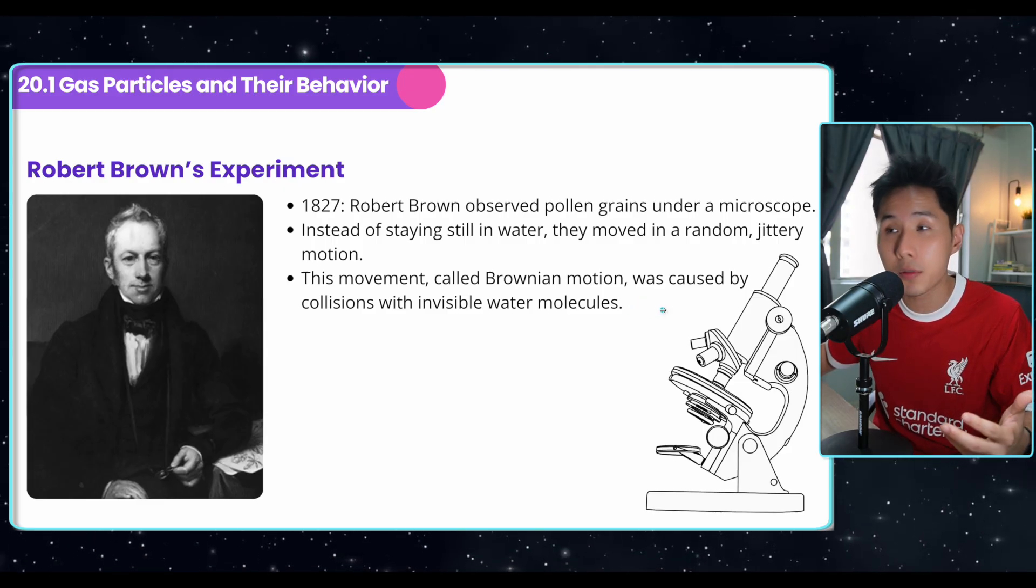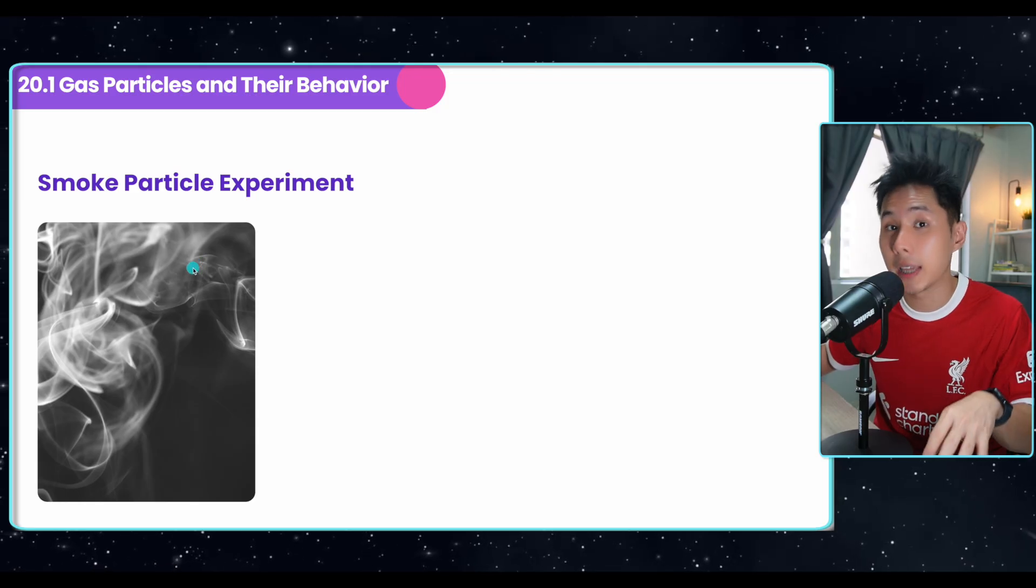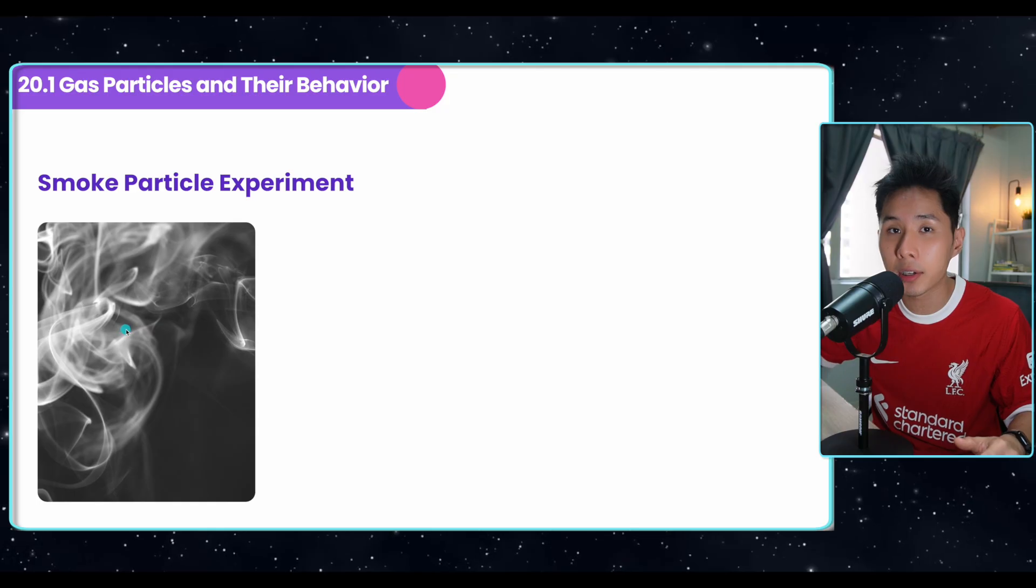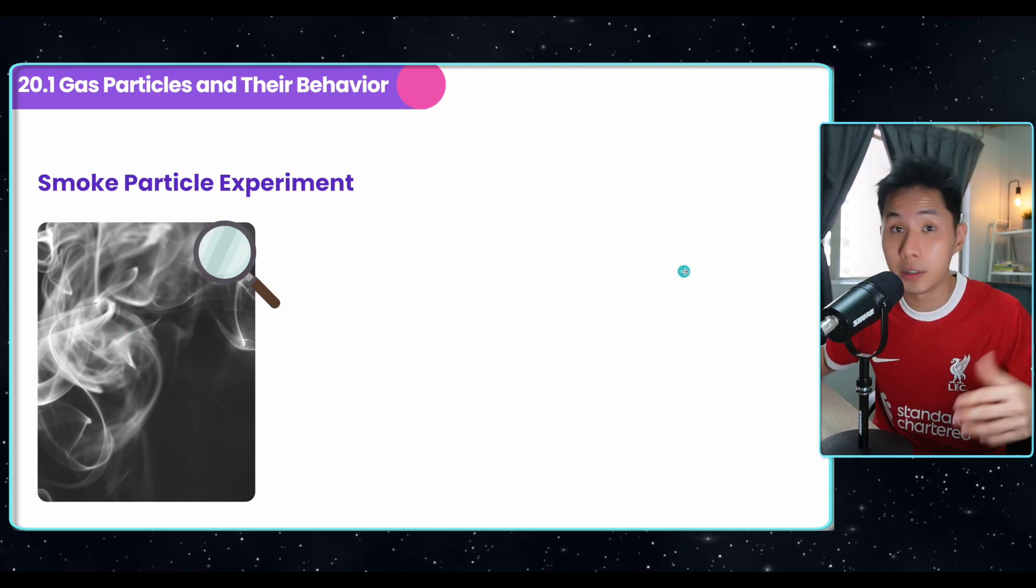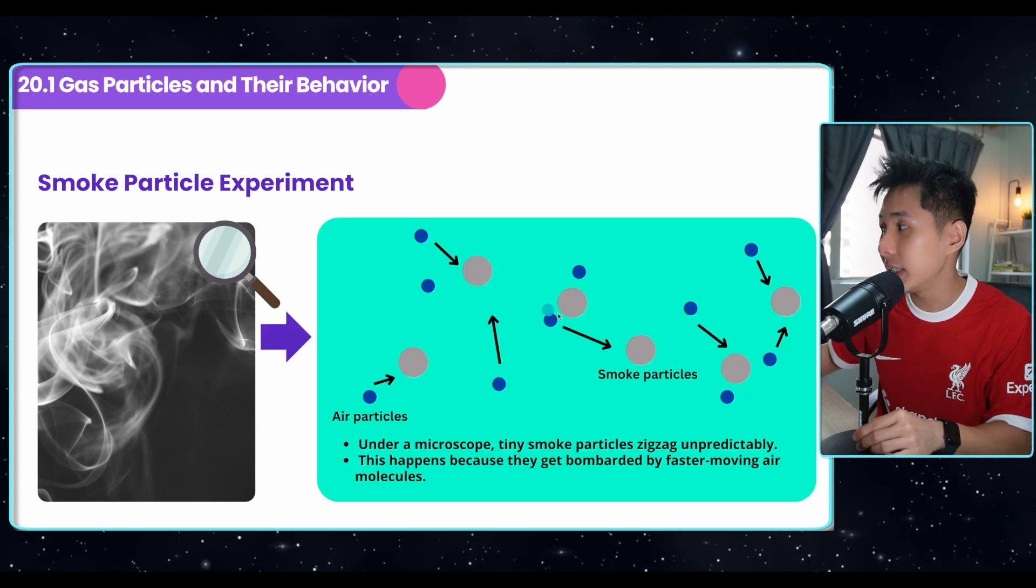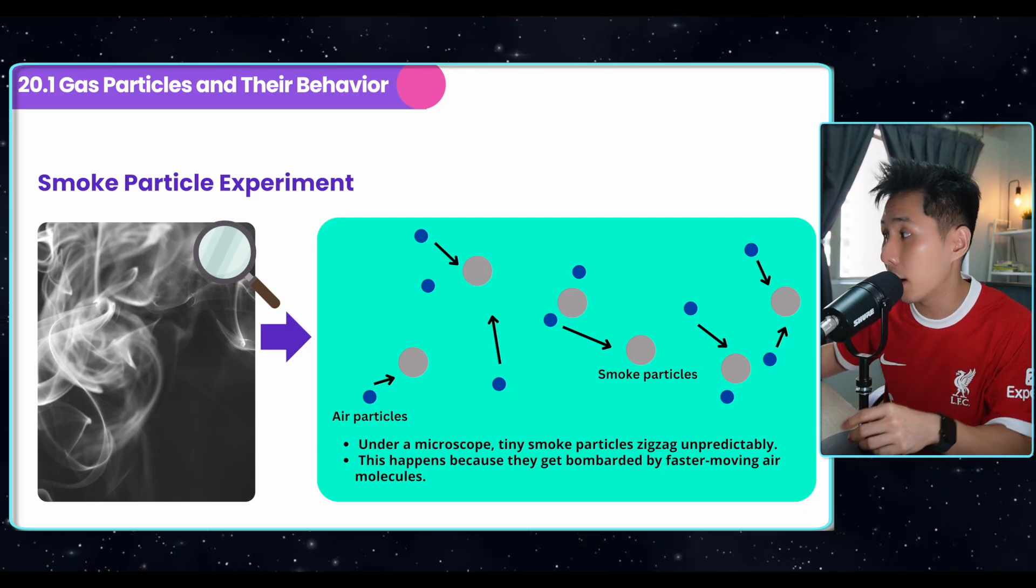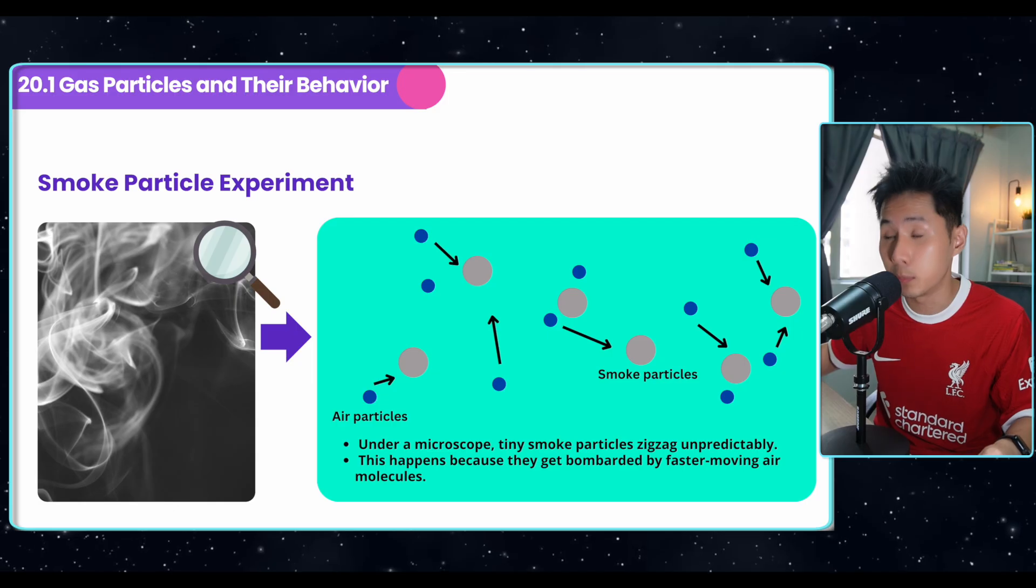And it doesn't just apply to the pollen grain, later people realized that it also applies to the gas particles. Look at this smoke image here. You can see that the smoke particle move in the zigzag pattern. And if you were to use a microscope and zoom in, you will find out that these smoke particles move in such order because they are collided by the air particles. So Brownian motion explains how these air particles move.